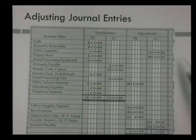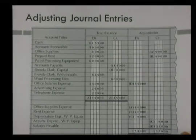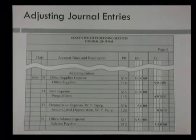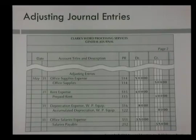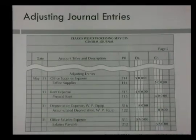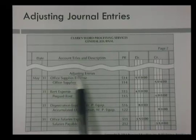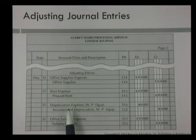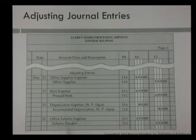On the worksheet you've already figured out the accounts debited and credited. Then when you go to the general journal, this is what your entries would look like. You start the adjusting entries right underneath your other journal entries. Skip a line, write the word 'adjusting entries,' and then do your A, B, C, D entries.